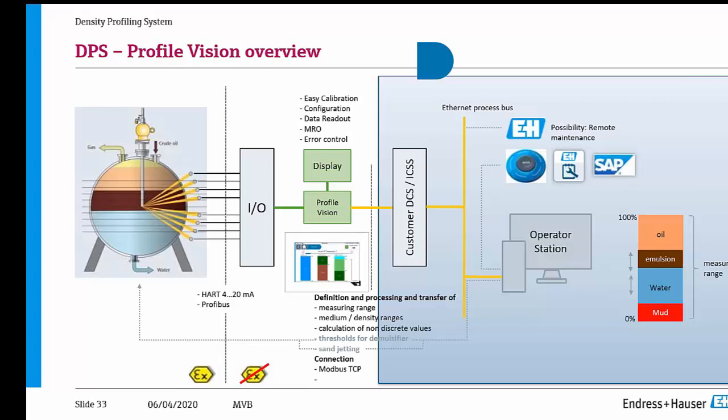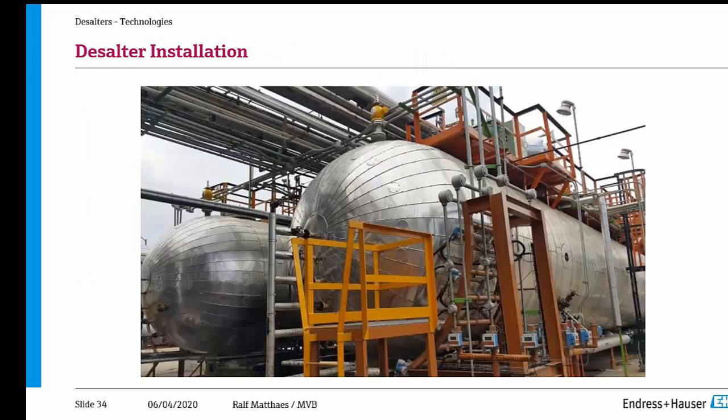The detectors send signals via ARC or PROFIBUS to I/O cards, to the PLC with its HMI, and to the control room — where you can see sand, water, emulsion, and oil layers. Here in the picture you can see the detectors — not attached directly to the vessel — and the brown frame which is separate. On top you can see the yellow source container, with a spool piece below containing the dip tube, where the source is lowered to approximately 700 mm distance from the detectors.